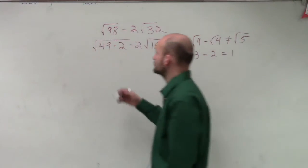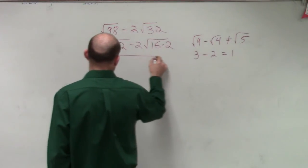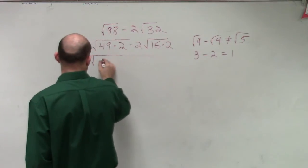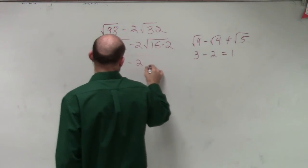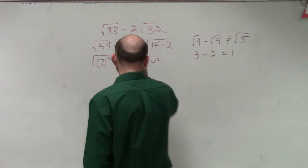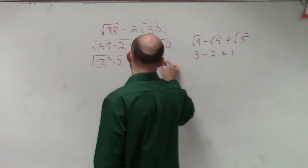Then I can now rewrite this. Oh, let's do it this way, because this is what we've been practicing. As 7 squared times 2 minus 2 times 4 squared times 2.